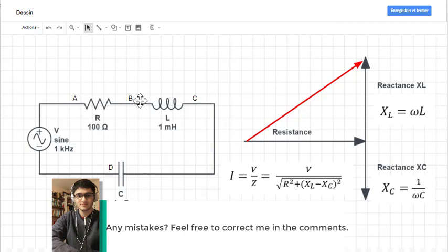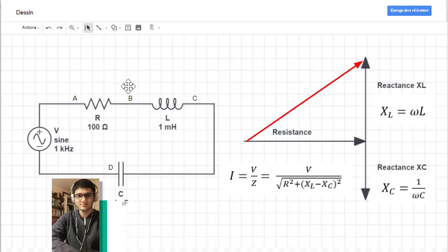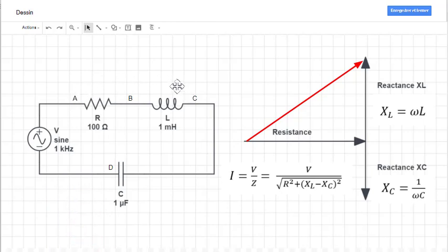So, voltage drop AB plus voltage drop BC will be the voltage drop across AC. Voltage drop across BC plus the voltage drop across CD is the voltage drop across BD. And finally, voltage drop from A to D is the sum of each of these voltage drops.